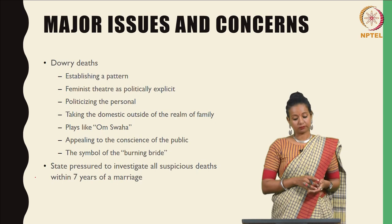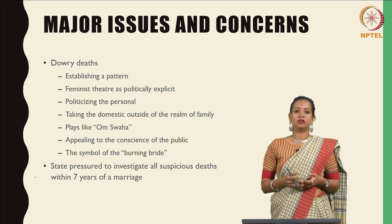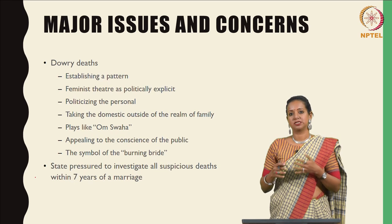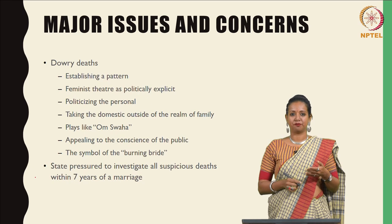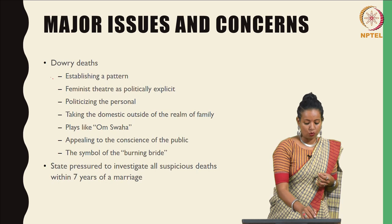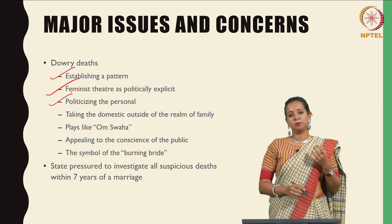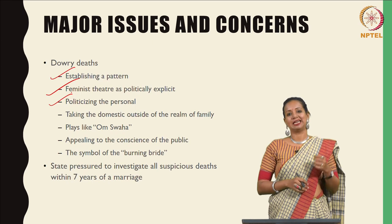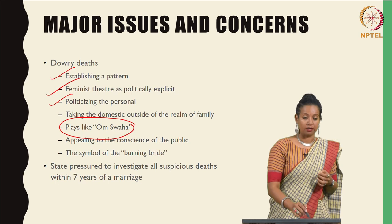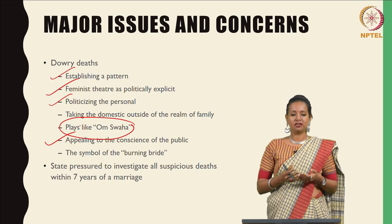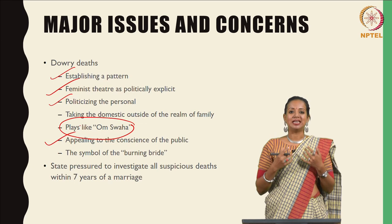The other set of major issues were dowry deaths, where feminists in India tried to establish a pattern showing the ways in which young women tended to suffer particular kinds of burns and circumstantial deaths, and how these patterns could help identify the systemic concern of dowry death. This also traced the rise of feminist theatre as a politically explicit way of addressing these concerns. This was also the time when the personal was deeply politicized by women's movements and the domestic was taken outside of the realm of family — plays like Om Swaha spoke to these concerns.